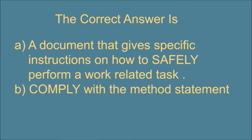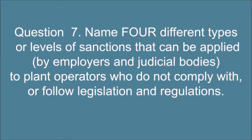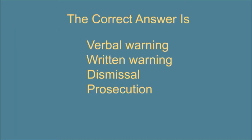Question 7. Name four different types or levels of sanctions that can be applied by employers and judicial bodies to plant operators who do not comply with or follow legislation and regulations. The correct answer is: verbal warning, written warning, dismissal, prosecution.